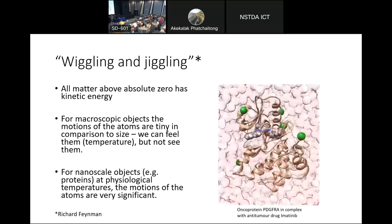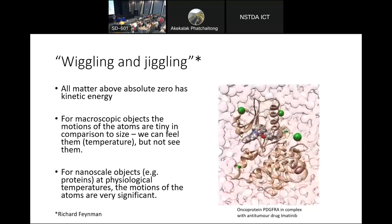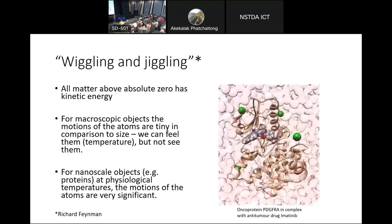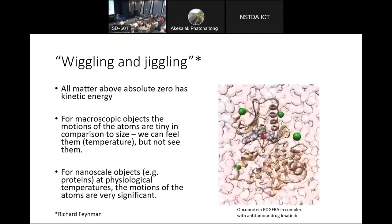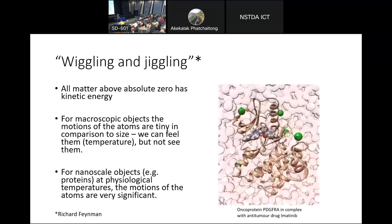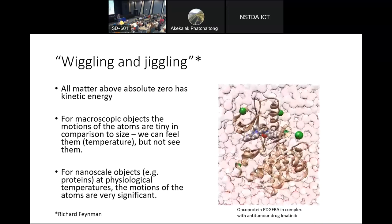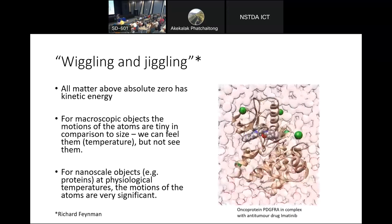Everything is always jiggling around if it's got anything above absolute zero. For macroscopic objects, you can't see it because the size of those vibrations are really small compared to the size of objects. But when you get down to the atomistic scale, the amplitude of those vibrations is actually of the same size as the objects we're dealing with. In other words, these are really significant motions. And this is happening all the time.